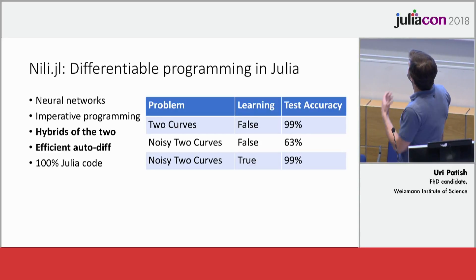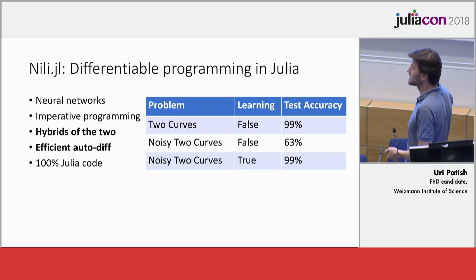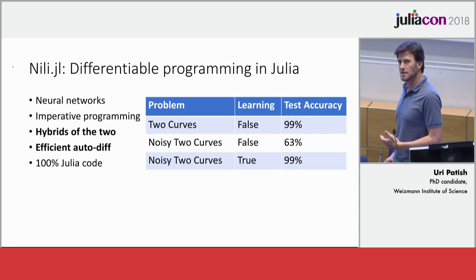For example, in the two curves problem, you can get the program that gets almost 100% accuracy on the non-noisy case. But when you add noise, the accuracy will drop to 63%. But since on this kind of problems using this package, you can actually train the program, you can get back your performance on the test.